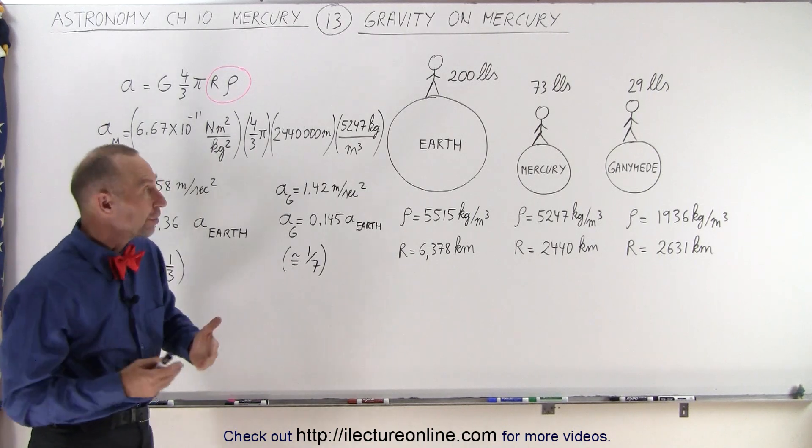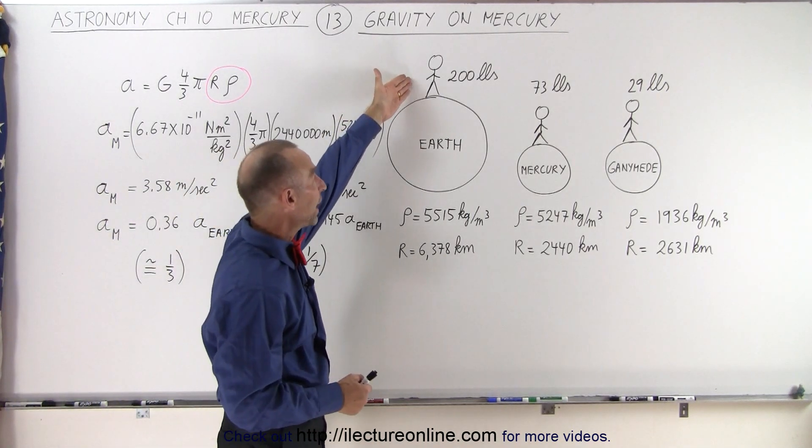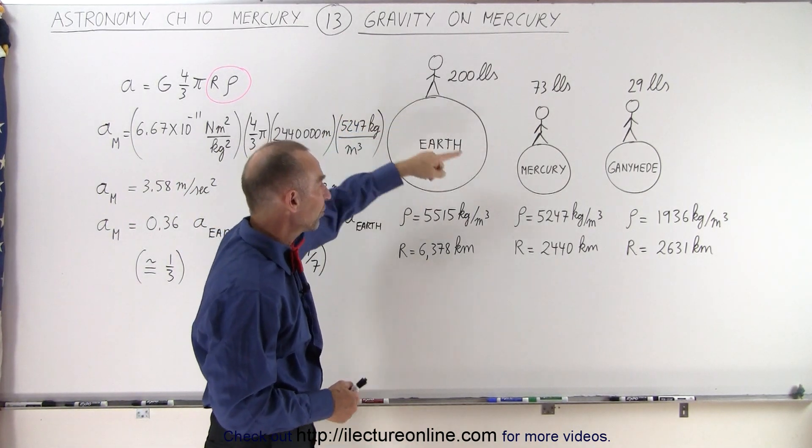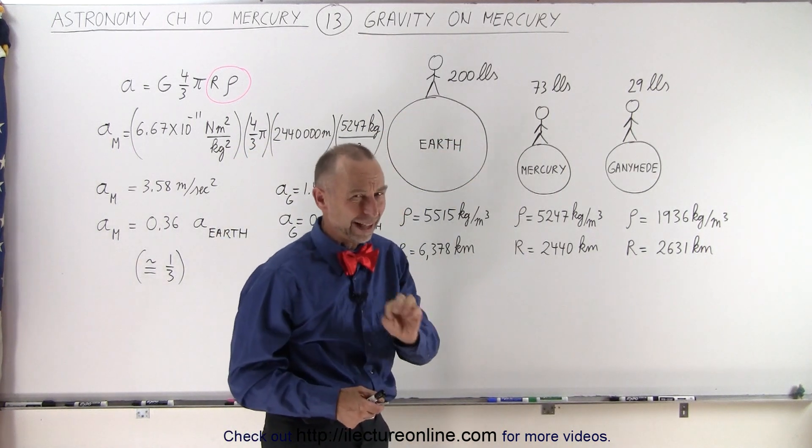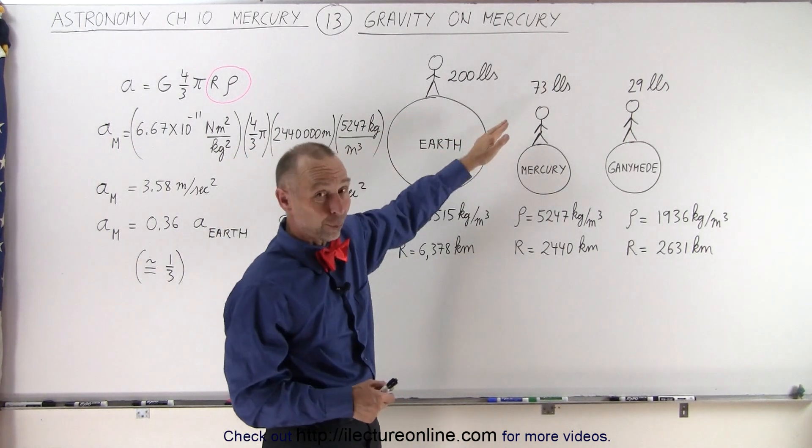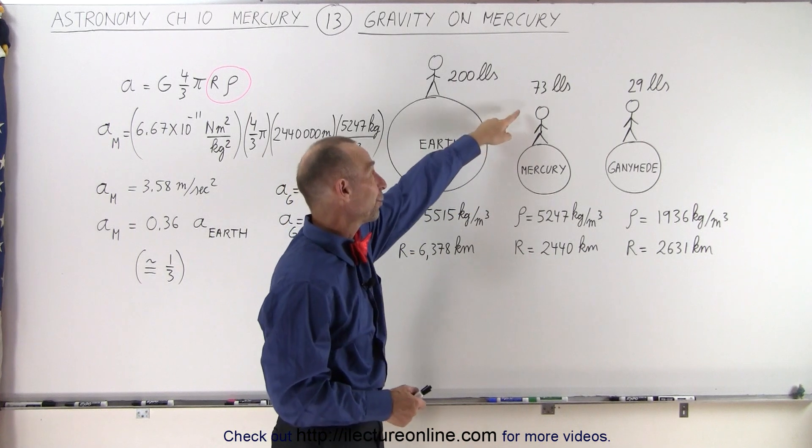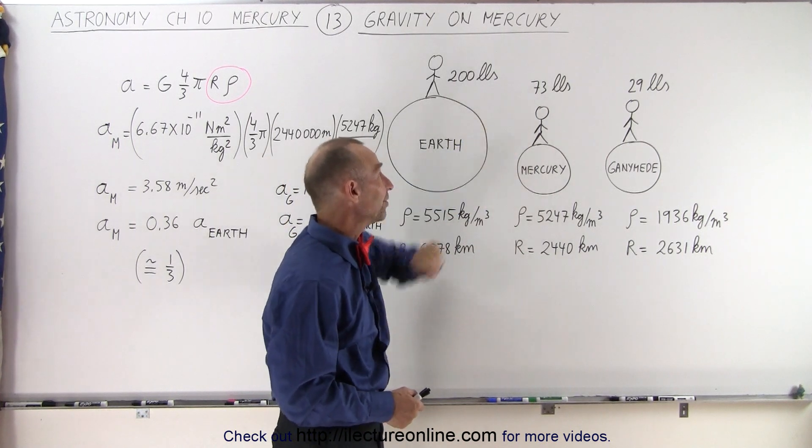Now, if we have a person on the earth that has a weight of 200 pounds, that same person standing on the surface of Mercury, and you have to be careful where you're standing because you can get quite hot on Mercury, would have a weight of 73 pounds.